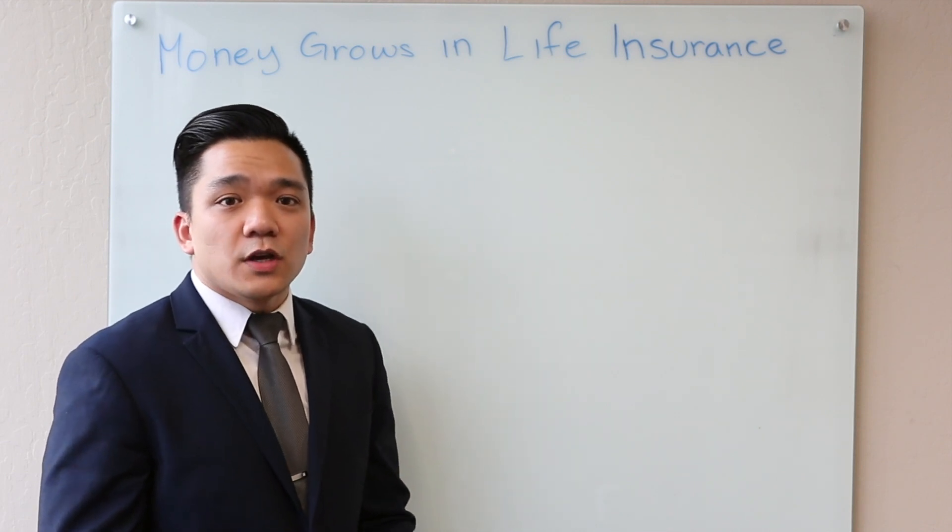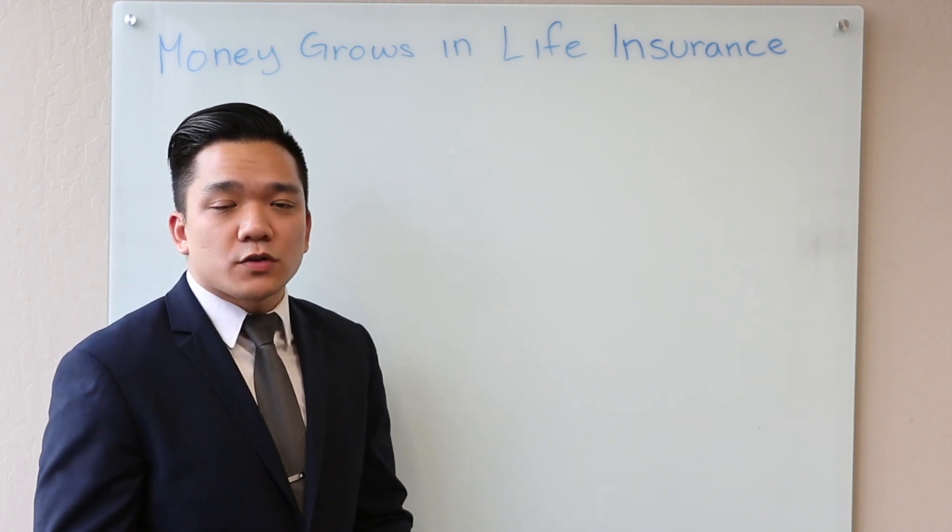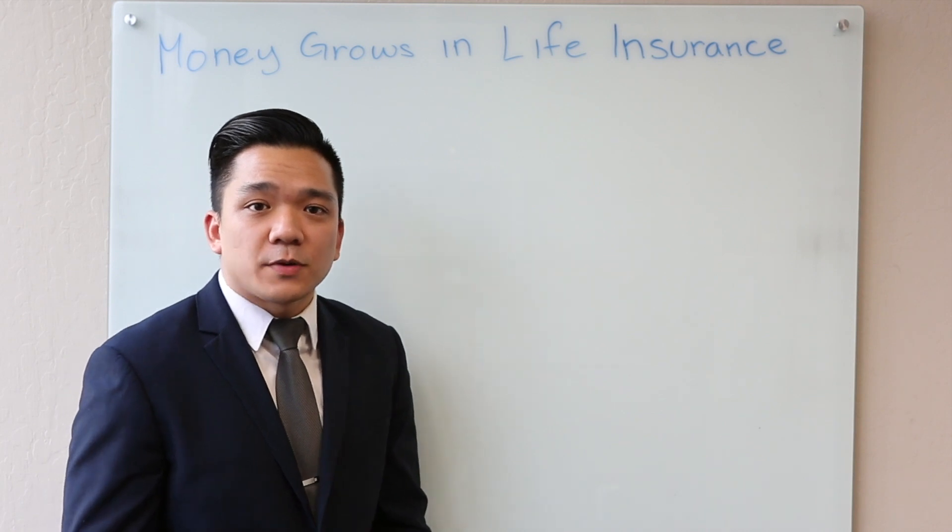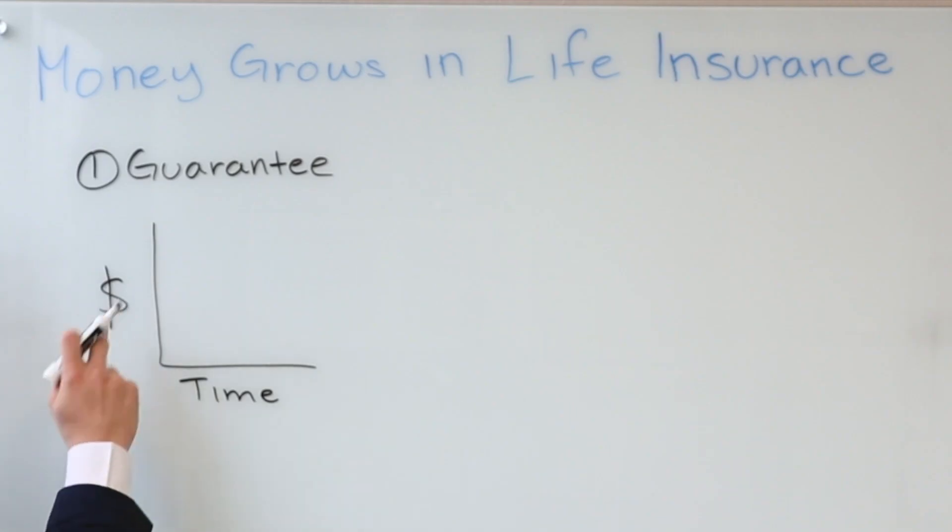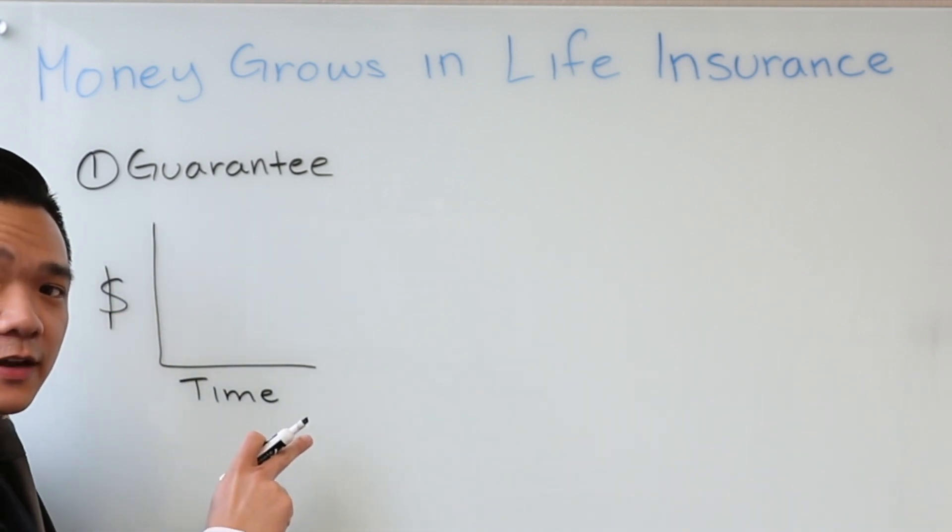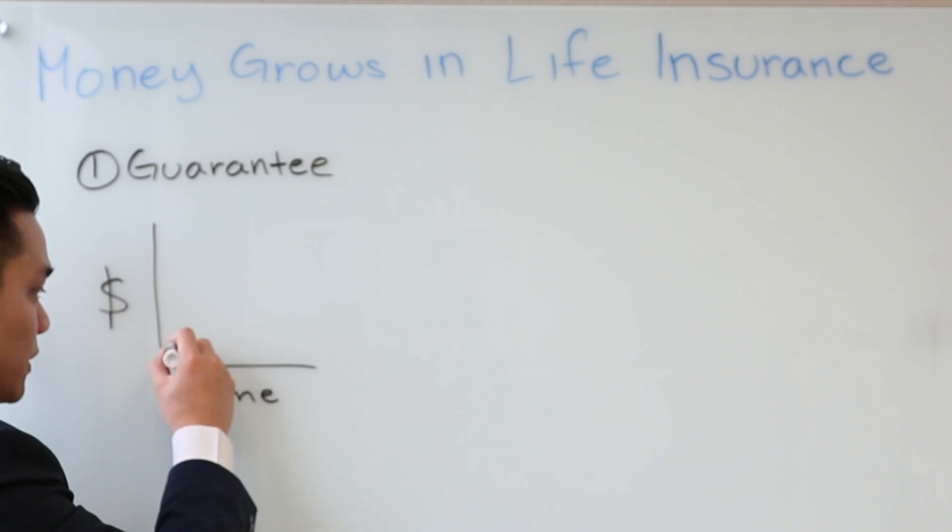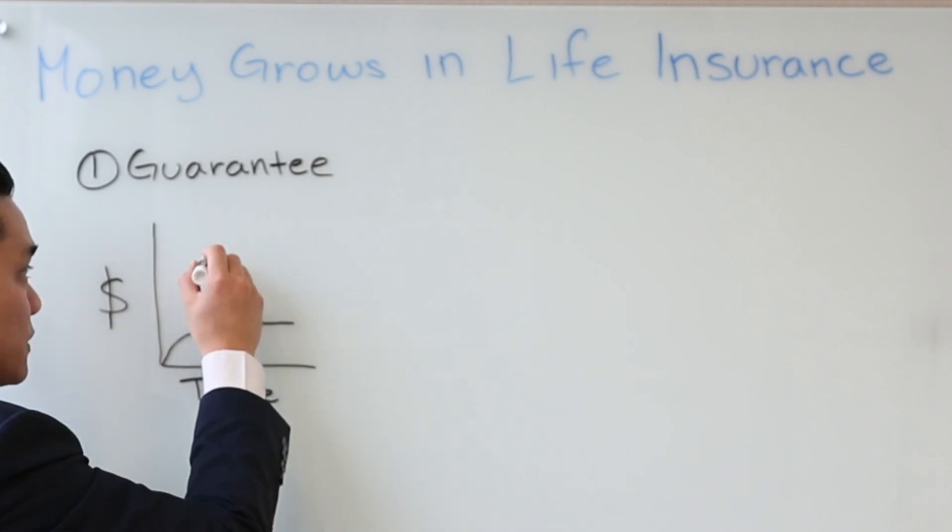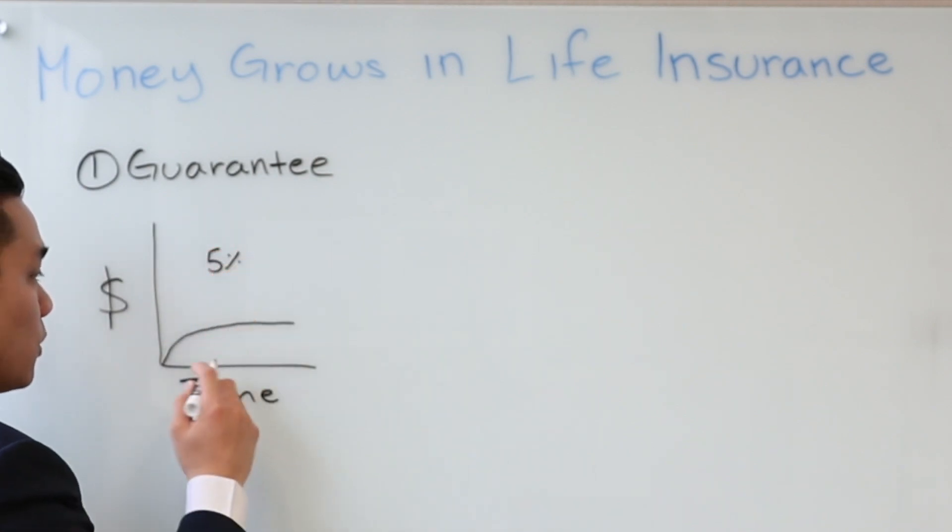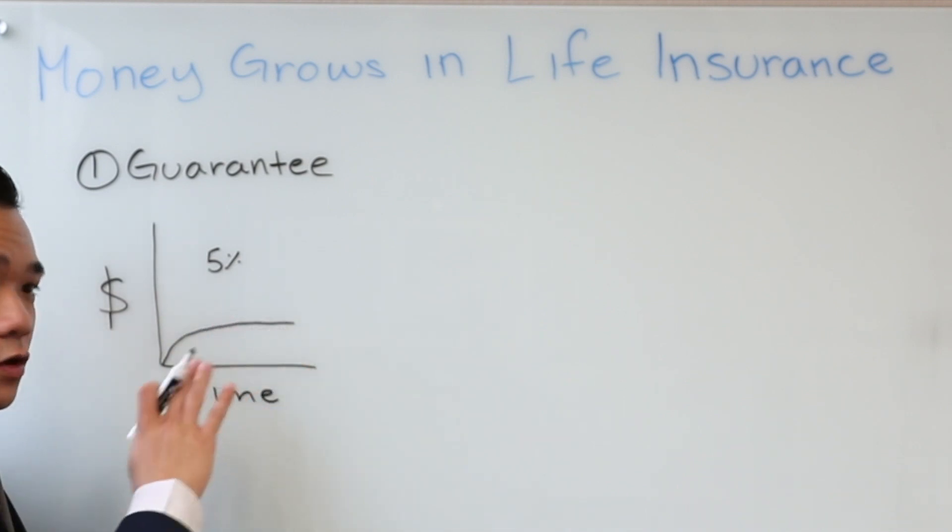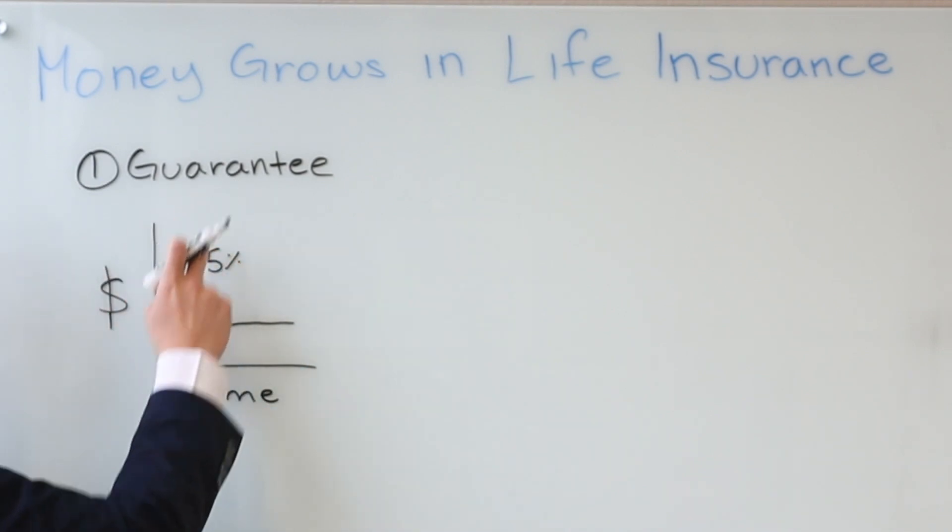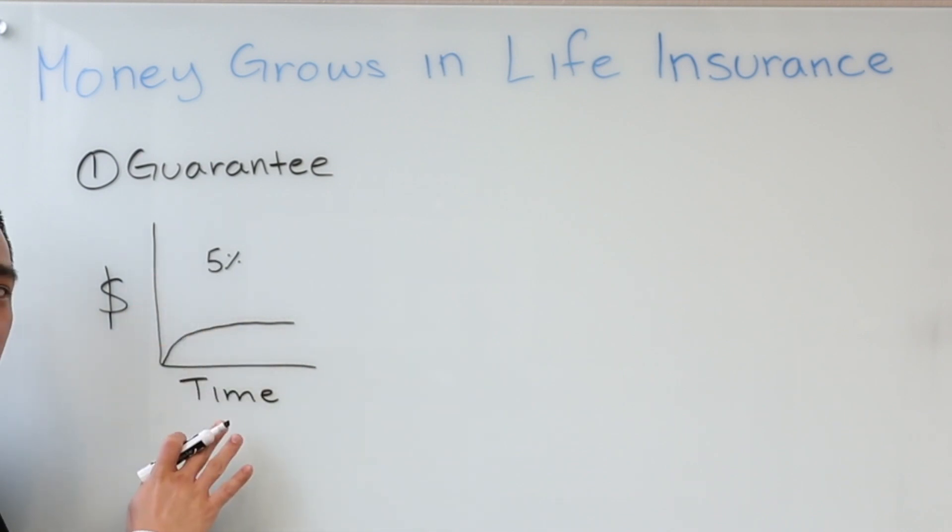Now, we're going to get right into it. Typically, there are three ways that your money grows in life insurance. Number one that we have up is called guarantees. With our money on the y-axis and our time on the x-axis, guarantees, you're going to see your money grow very steadily, and let's just say this is considered 5%. So, no drastic shifts, no drops, no matter how the market performs, you will get your guarantee of 5% every single year.